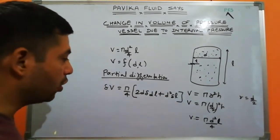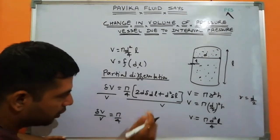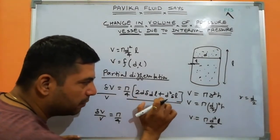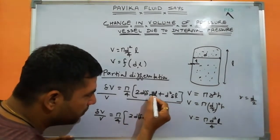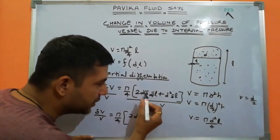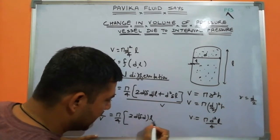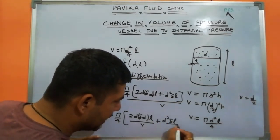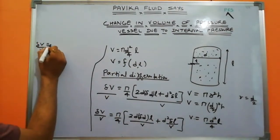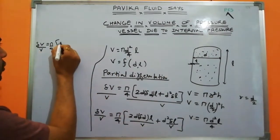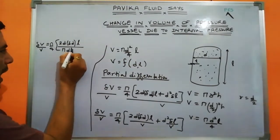Dividing both sides by V gives δV/V = (π/4) divided by V, multiplied by [2d·δd·l + d²·δl]. Substituting V = πd²l/4, the 4 flips up and the π cancels. So we get δV/V = (π/4)·[2d·δd·l / (πd²l/4)] + [d²·δl / (πd²l/4)].